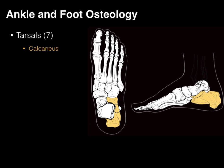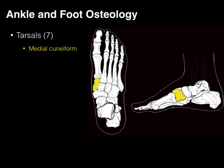The calcaneus is where the gastrocnemius and soleus attach via your Achilles tendon. We also have the navicular bone just in front of the talus, our large cuboid bone just in front of the calcaneus, and then three cuneiforms — named for their wedge shape — a medial cuneiform, intermediate cuneiform, and lateral cuneiform.